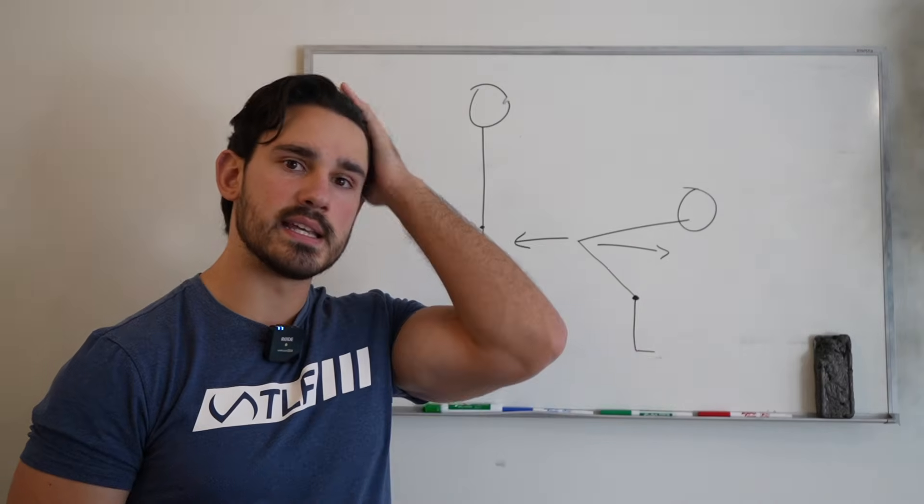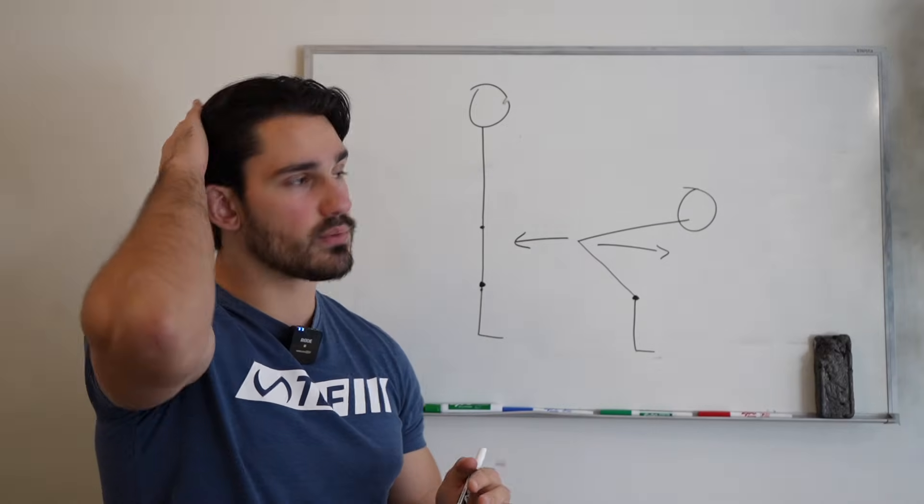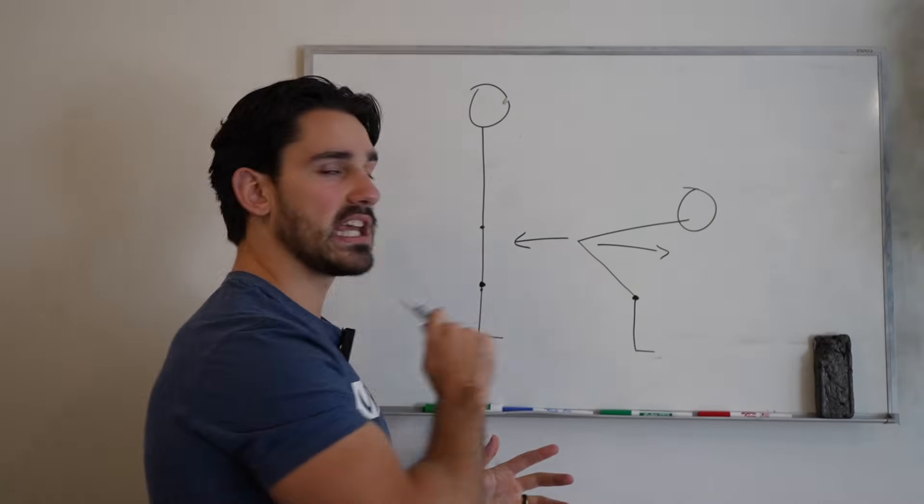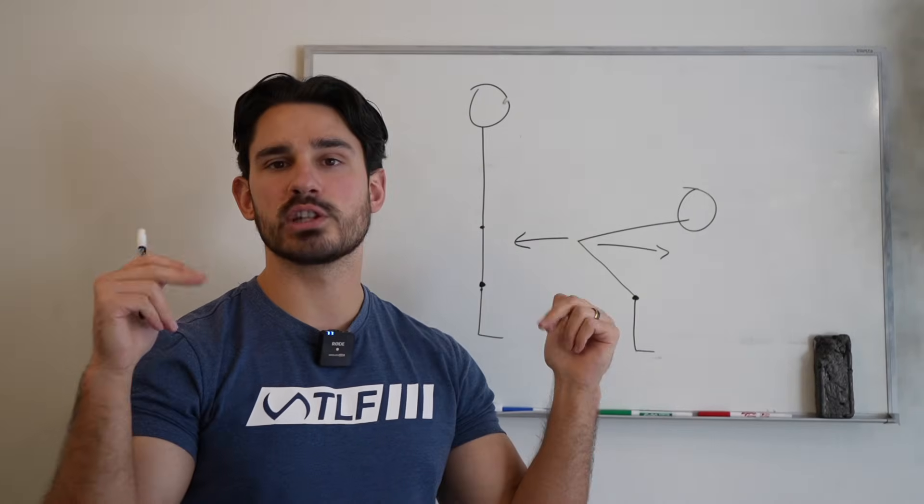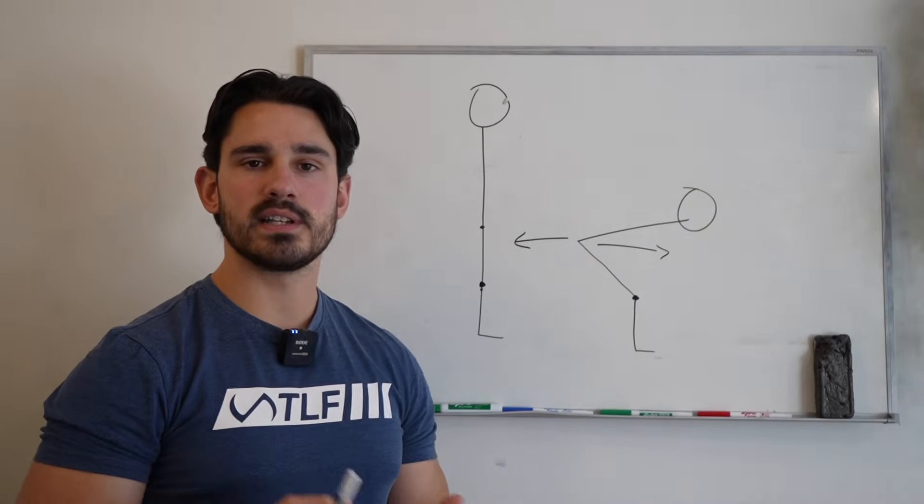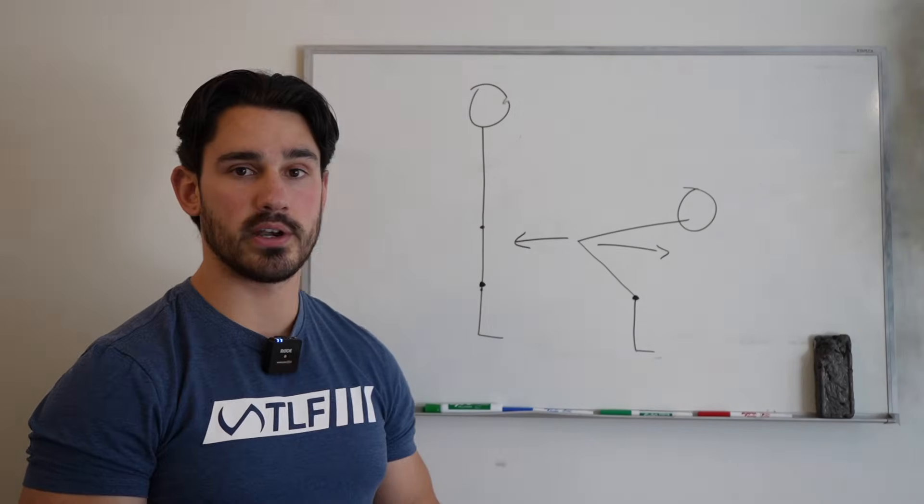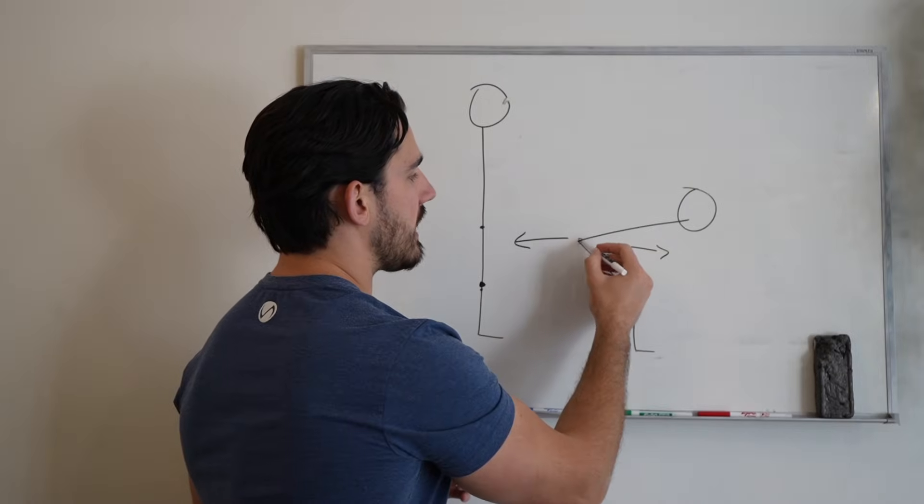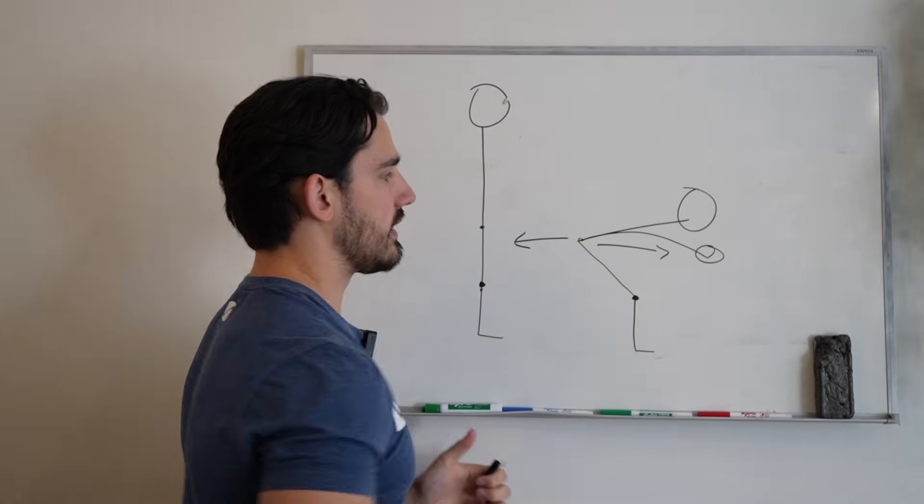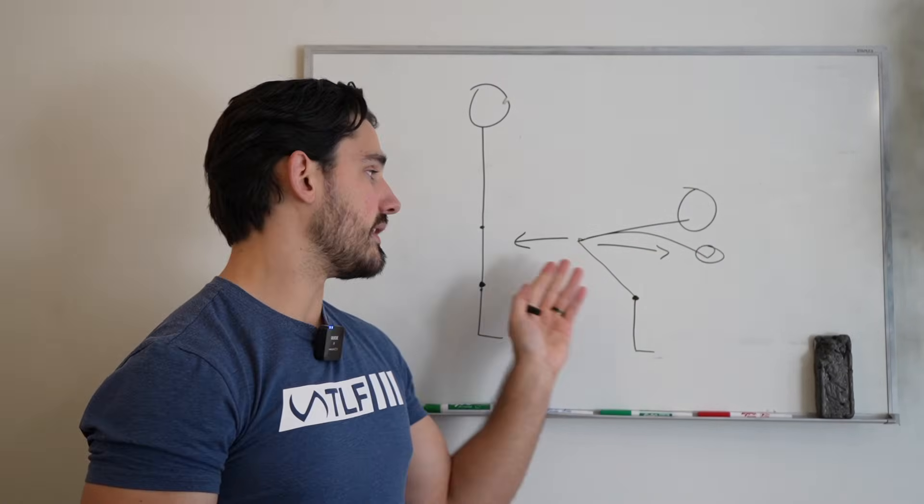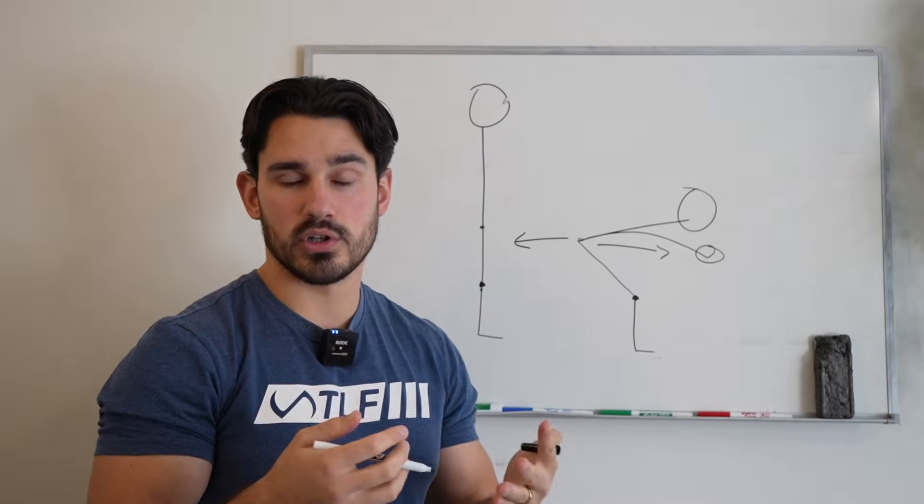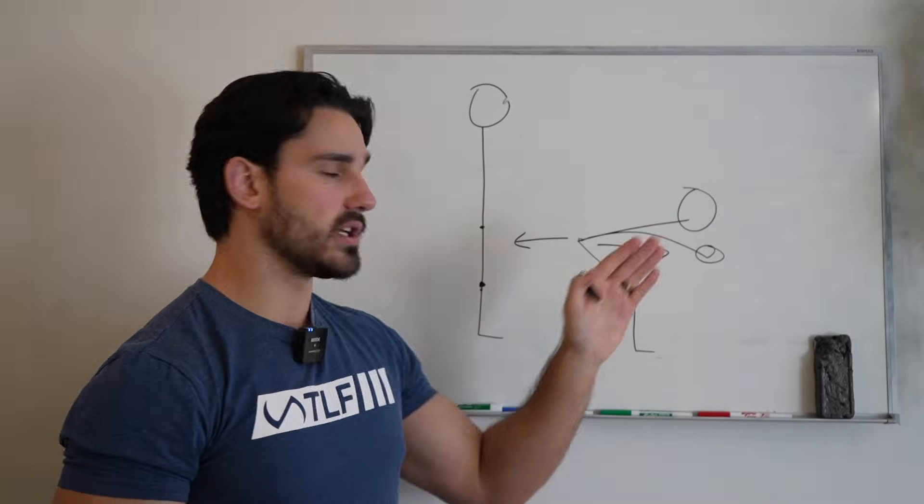But the problem with this is the fact that a lot of times when we just simply think about moving the hips forward and backward, that can oftentimes lead to undesirable outcomes. For example, if you're trying to train your hips, like rounding your low back over like this toward the bottom to a position where now all of a sudden your erectors and your back are doing a lot of the work as compared to your hips.